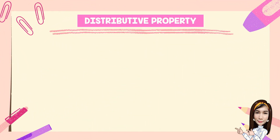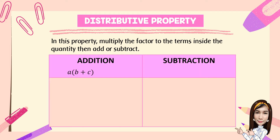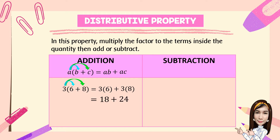Fourth, we have distributive property. In this property, multiply the factor to the terms inside the quantity, then add or subtract. For addition: A times the quantity (B plus C). We distribute A to the terms inside the parentheses, so A times B is AB and A times C is AC. For example: 3 times the quantity (6 plus 8). We distribute 3 to 6, giving 3 times 6, and distribute 3 to 8, giving 3 times 8. Simplifying: 3 times 6 is 18, plus 3 times 8 is 24, and the sum is 42.